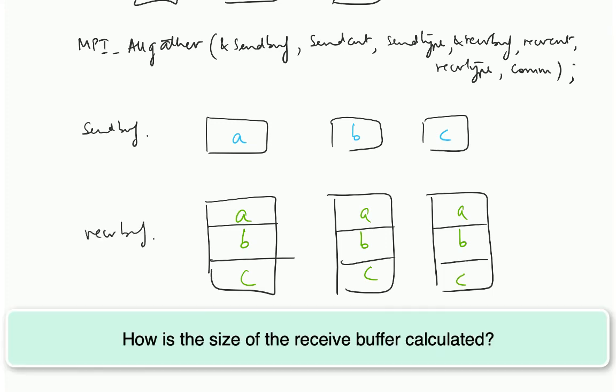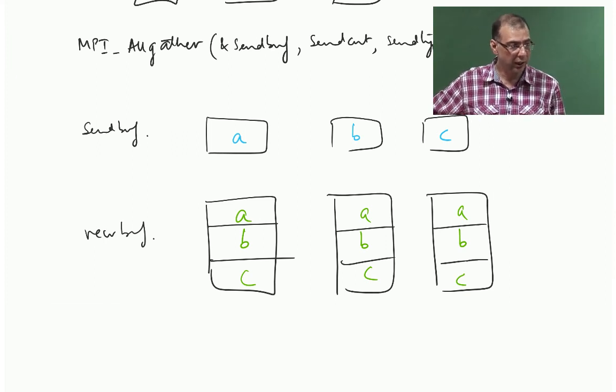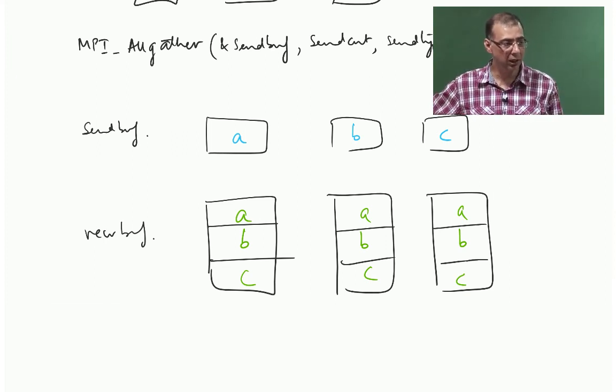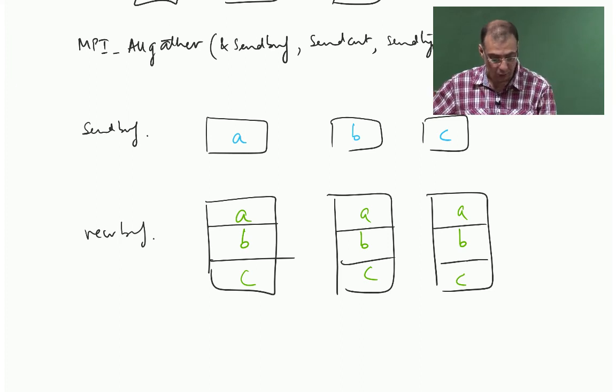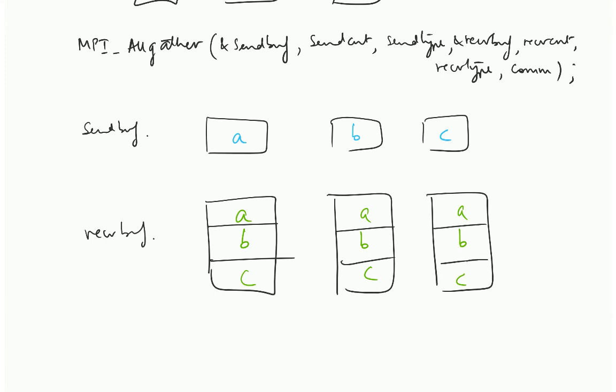Is it clear? So how is the size of the receive buffer calculated? That is for the programmer to figure out. It is simply the MPI data type, size of MPI data type multiplied by the number of elements, that is the count. So he knows that. He has to know that, without that the operation cannot be performed.